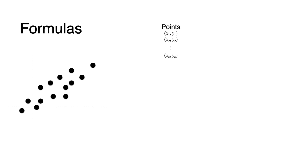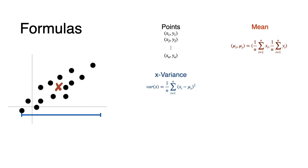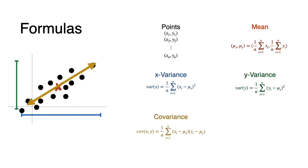Let's look at the actual formulas for these quantities. If our dataset has points (xi, yi) for i equals 1 to n, then the mean, or center of mass, is two numbers, mu_x and mu_y — each is the average of the xi and the average of the yi. The x-variance is the average of the squares of (xi − mu_x). The y-variance is the average of the squares of (yi − mu_y). The covariance is the average of the products of (xi − mu_x) and (yi − mu_y). Finally, the covariance matrix has all the variances on the main diagonal and the covariances outside the main diagonal.